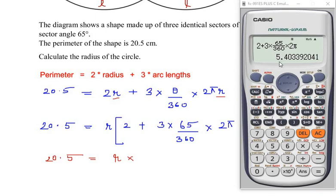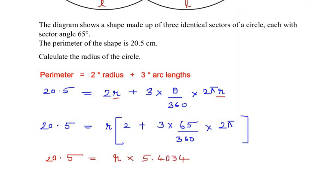So we get the value as 5.40339. This is an intermediate value, so we are going to take this value to at least three decimal places, or to get more accurate values, till four decimal places. So we'll take it as 5.4034. Now making r as the subject, that is radius as the subject, we will write 20.5